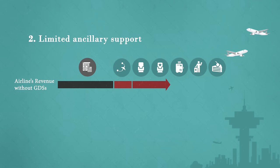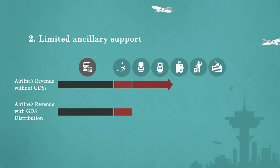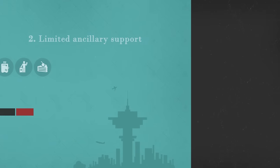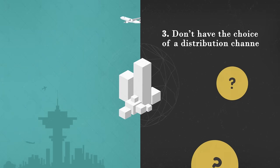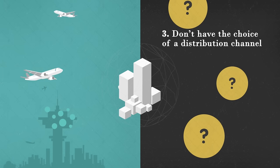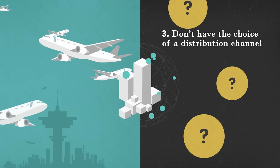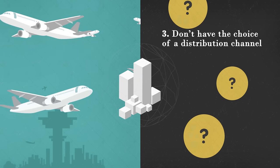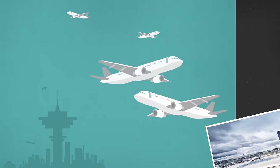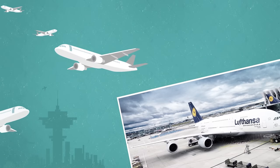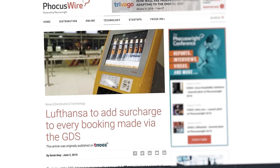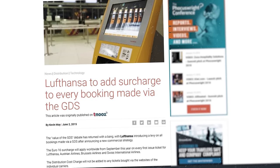While global distribution systems' APIs transmit key booking information to online travel agencies, ancillary support is usually limited. And perhaps the main problem is that airlines don't have full control over their inventory and the choice of a distribution channel. Some airlines, like Lufthansa for instance, decided to combat GDS dominance and encourage people to buy tickets directly from their sites.